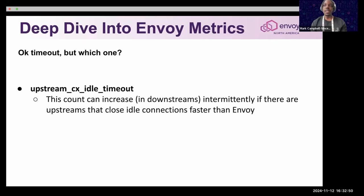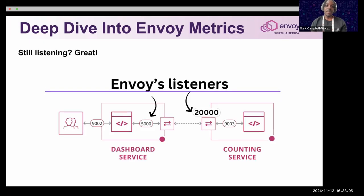This way, if there's a connection that's trying to be closed, it'll wait a bit longer in case it's taking more time or is idle. So we've covered the timeout metrics — but what about listeners?